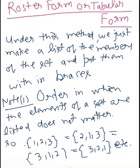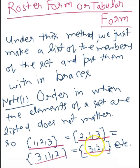Under the roster method, we just make a list of the members of the set and put them within the braces. The order in which the elements of a set are listed doesn't matter. So whether you write 1, 2, 3 or 2, 3, 1 or 3, 1, 2 — it doesn't matter.